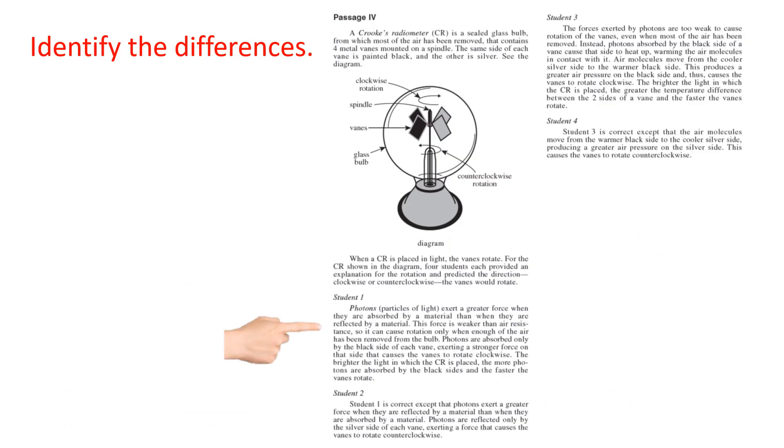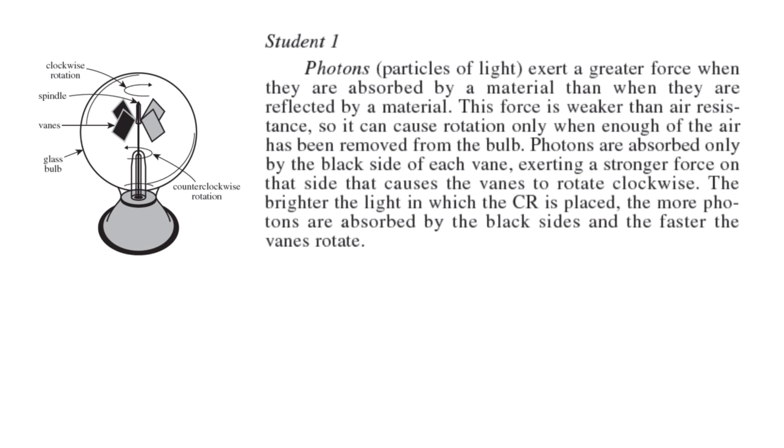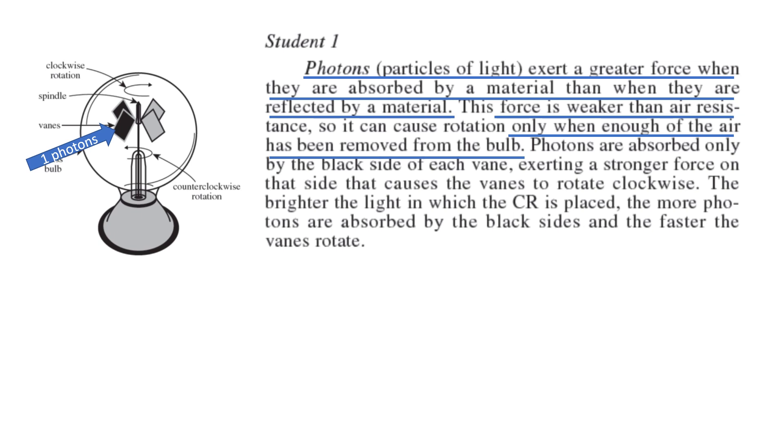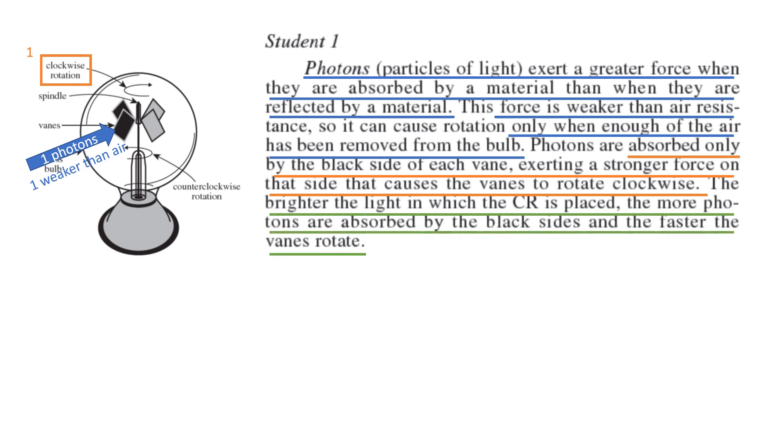Your next step is to identify the differences. Remember, the explanation and the rotation. So you're going to break down what each student believes, looking in particular for the explanation and the rotation. Student one: photons exert a greater force when they absorb by a material, than when they were reflected by a material. So photons play some role. The force is weaker than air resistance. Photons don't have enough force by themselves to do anything, only when enough air has been removed from the bulb can they have an impact. So photons are hitting the spindles, and that's causing them to move.